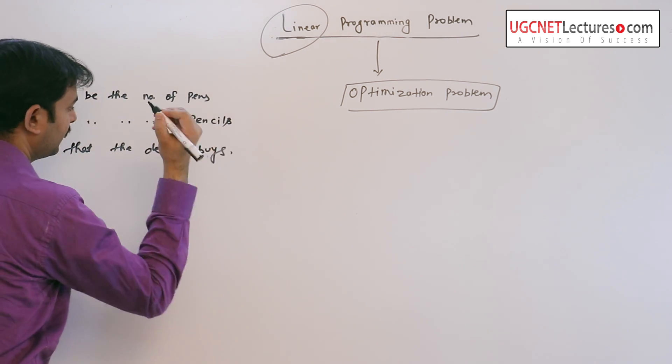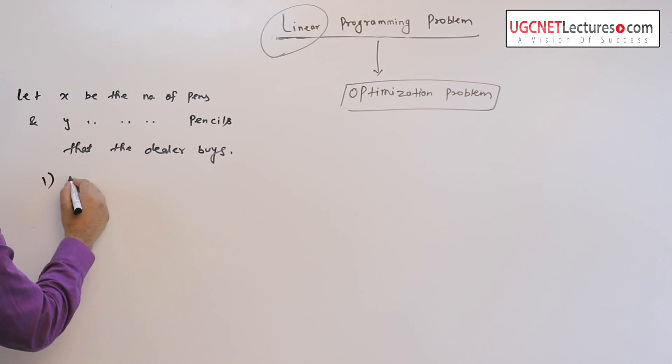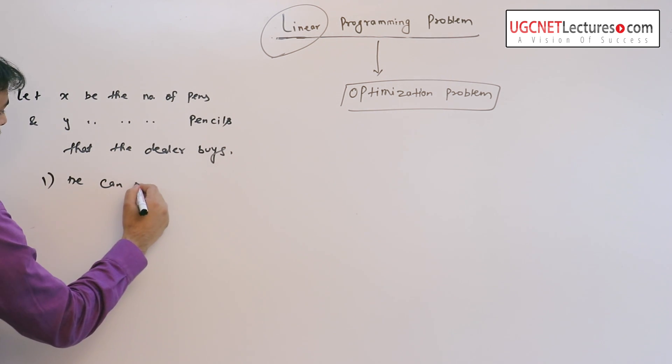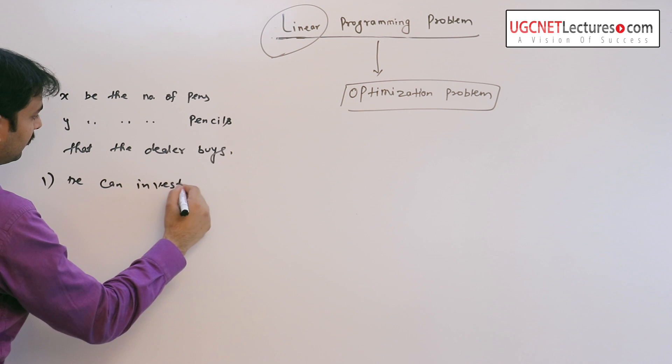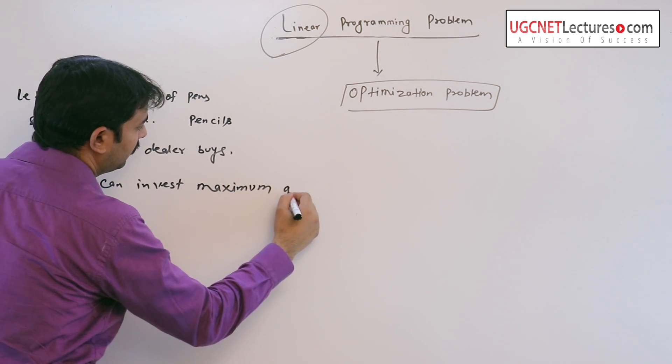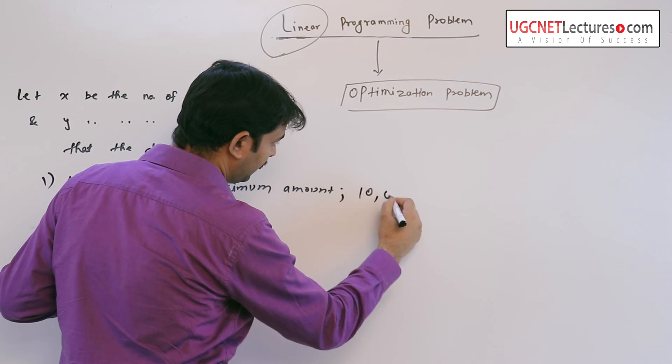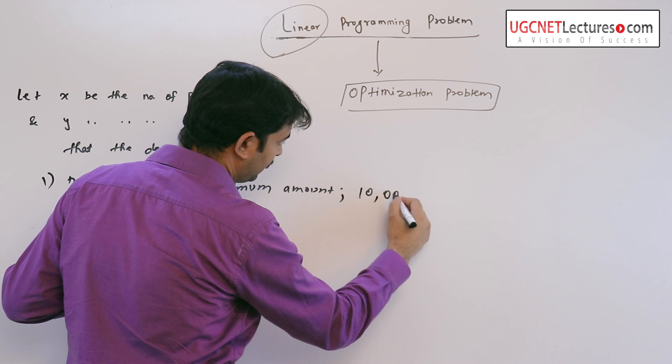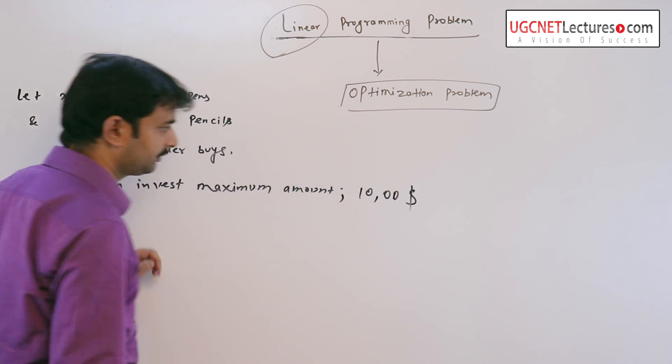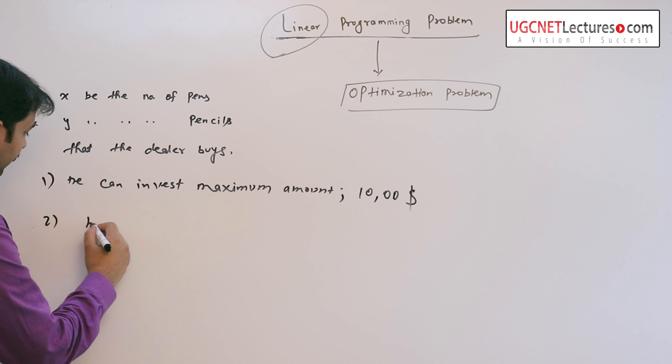But the dealer is constrained that he can invest maximum amount, say thousand dollars, and the second constraint is he can store say 60 items.